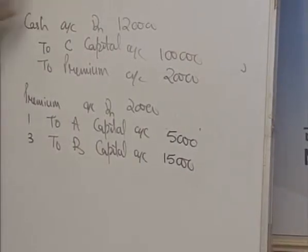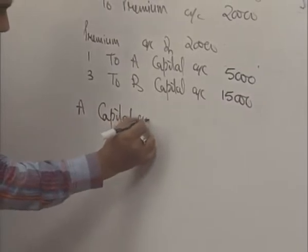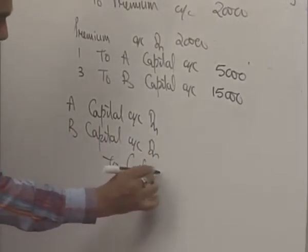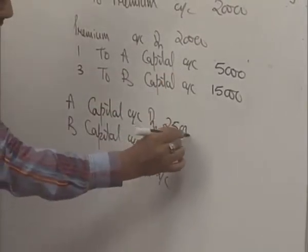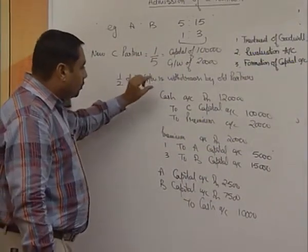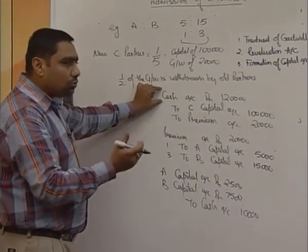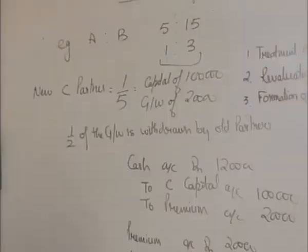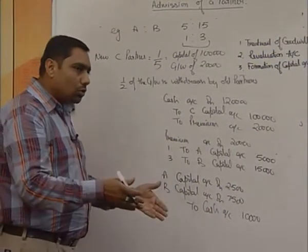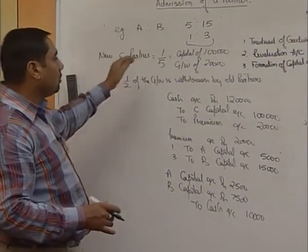The next step is half of the goodwill is withdrawn by the old partners. In case they withdraw the goodwill, you debit them. A's capital account debit, B's capital account debit, to cash account. Half of 5,000 is 2,500; half of 15,000 is 7,500, total 10,000. When the new partner brought cash, we debited cash because whatever comes to the business is debited. Now, once cash goes out as partners take out the money, cash is credited — whatever goes out from the business is credited. So these are the entries for the treatment of goodwill.